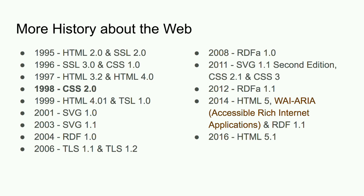ARIA is essentially a way of adding additional semantics to a website to give meaning about what a piece of functionality is intended to do. It has landmarks that allow you to define different regions — search, navigation, footer. It's also structured to deal with dynamic content changes: ARIA live regions alert users when content is dynamically updated on the page. We also had the implementation of HTML5, and HTML5.1 is being worked on as well — all these standards are being updated and changed over time.